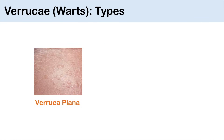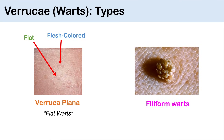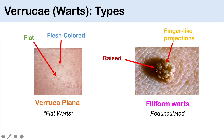Verruca plana are flat warts — generally flat, maybe slightly raised, but not as raised as verruca vulgaris. They're flesh-colored, which is key to their diagnosis. A way to remember them: they are plain, the same color as your normal skin. Filiform warts have a couple of key characteristics: they're very raised and have finger-like projections — what we call pedunculated. Seeing a wart with these finger-like projections confirms it is a filiform wart.